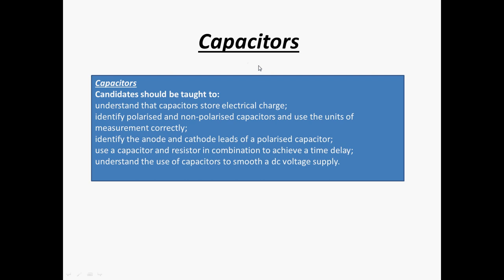These little things that you guys will have used on the course. This is basically what the exam board AQA says you need to know about them. So understand they store charge, understand what polarized and non-polarized is, and the use of the units of measurement correctly, spot the anode and cathode on the polarized capacitor, use one with a resistor to make a time delay, and understand how they can be used to smooth a DC voltage. Some of that sounds fairly straightforward, some of it sounds a little bit nerdy and hard to understand, but do not fear, I'll talk you through it very quickly.